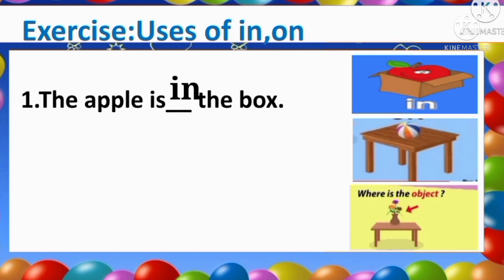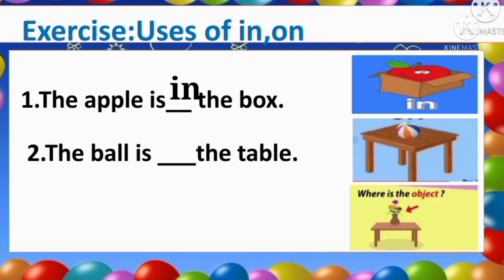The next sentence — all of you read: The ball is blank the table. Where is the ball? We can see the ball touches the table. So here it will be 'on'. The ball is on the table. 'On' is telling about the ball — where is the ball? And 'on' makes the relation between the ball and the table.